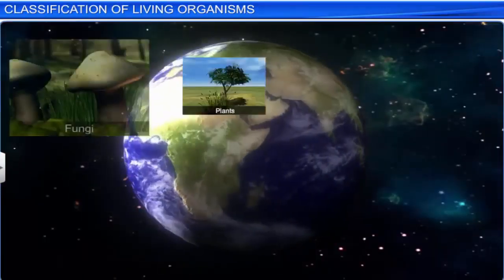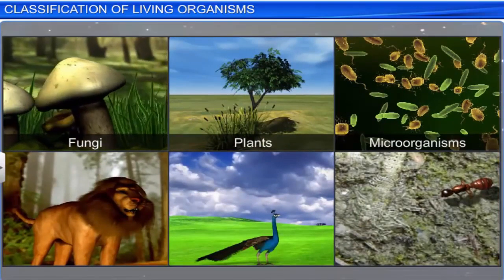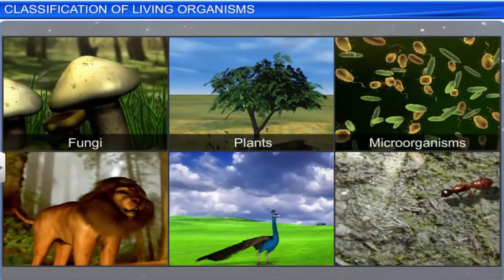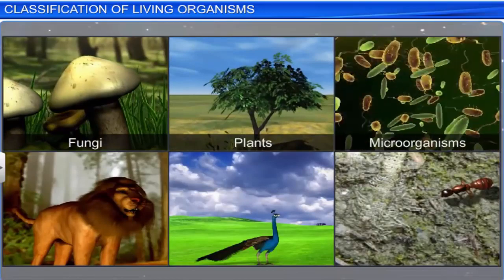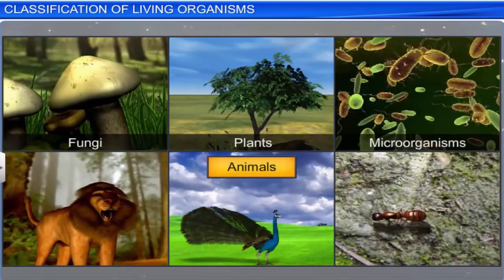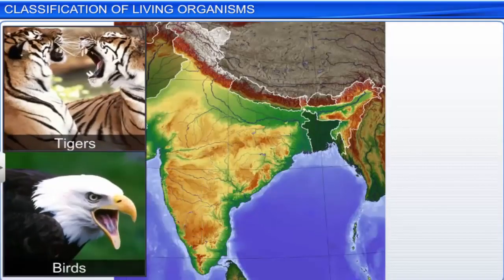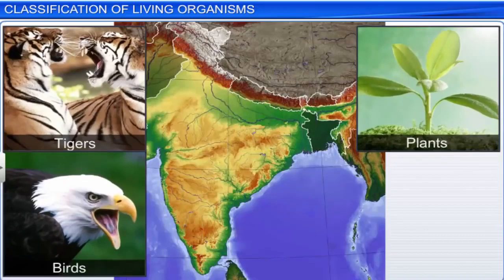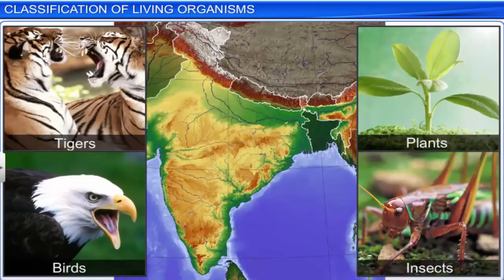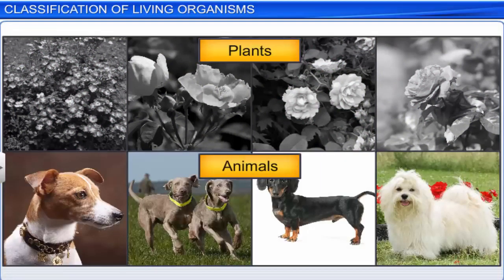Earth is a diverse planet with millions of different types of fungi, plants, microorganisms, and animals. The range and diversity of living organisms increases as we increase the area of our observation. Each different kind of plant, animal, or organism represents a species.